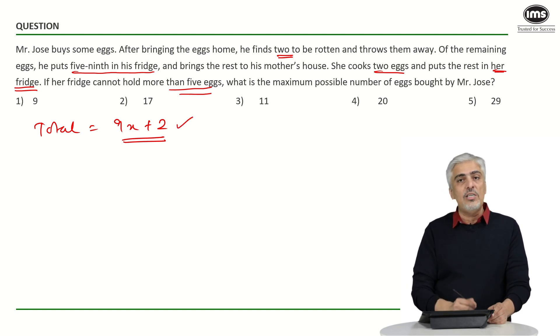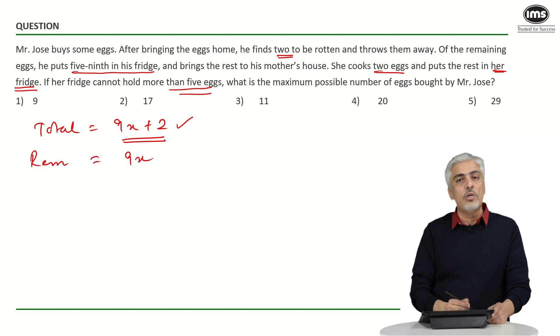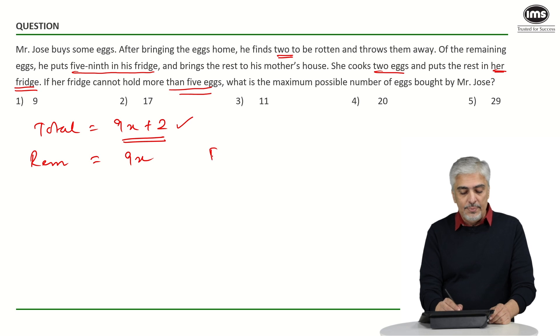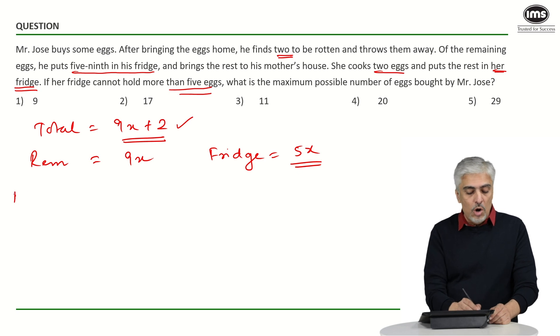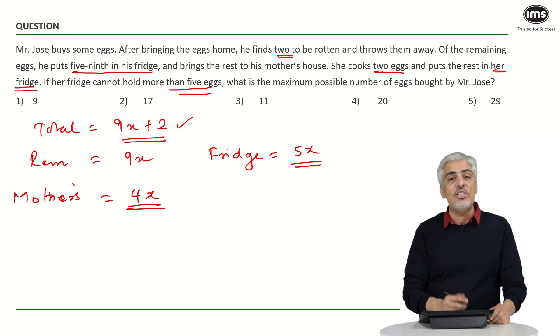Once you understood that you could start the total number of eggs with 9x plus 2, 2 eggs were rotten. That means remaining were 9x. So now from these remaining 9x eggs which are there, he puts 5 ninth in the refrigerator. So how many does he put in the refrigerator? 5 ninth of 9x will be 5x will be put in the refrigerator. So how much does he take to the mother's house? So he takes to the mother's house 4x eggs out of which the mother is cooking how many eggs?